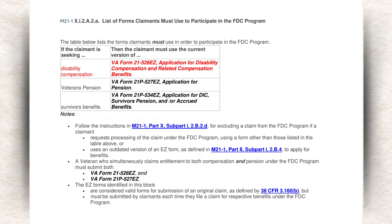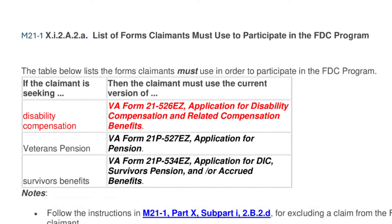Slide number two. Here's slide number two. This M21 reference covers the prescribed claim form. So what claim form do you need when you submit a fully developed claim? You need VA Form 21-526EZ. Now that is for disability compensation. Obviously, if you're doing pension or survivor's benefits, those are different prescribed claim forms. But for all intents and purposes, what we're talking about is disability compensation — you need VA Form 21-526EZ.